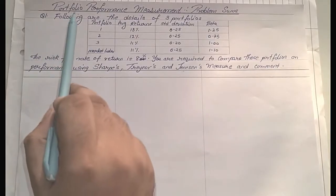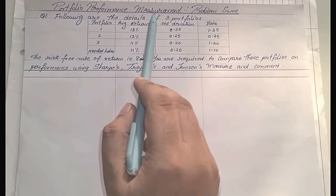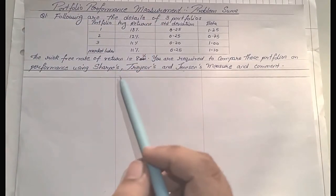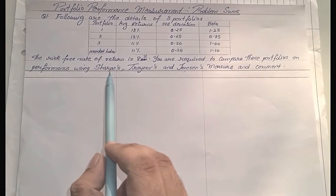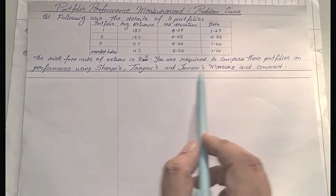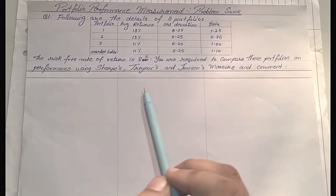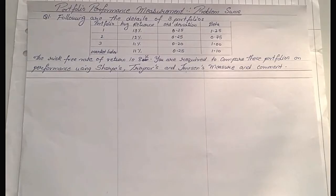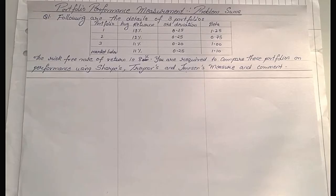Under the chapter portfolio performance measurement, the sums that usually come are based on calculating performance using Sharpe's, Treynor's and Jensen's measure. This is always a compulsory question which usually appears in the paper. In the exam they can ask any one, any two, or even all three measures. So let us see in one sum how to solve all three.